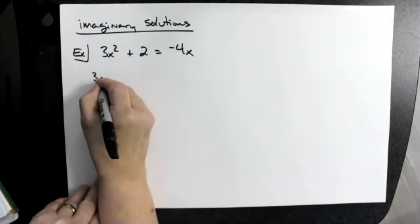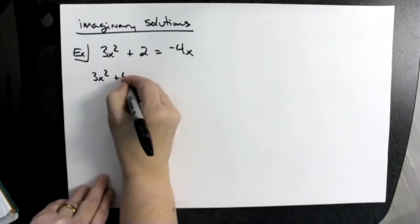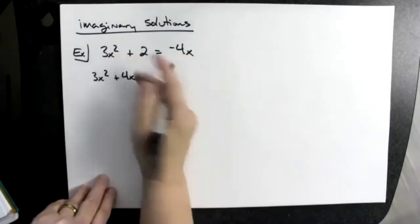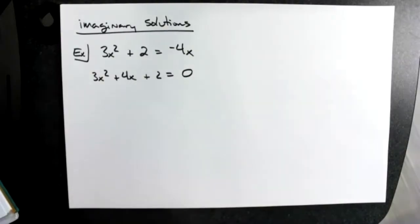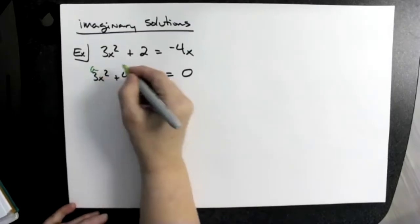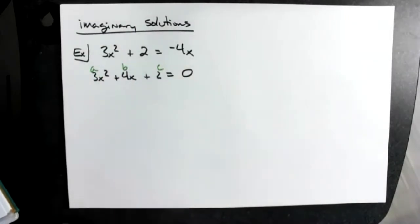I'm going to put it in the middle, so I'm going to go 3x squared, I'm going to add 4x because I had to add 4x to both sides to get it moved, plus 2 equals 0. At that point, now we have our a value, our b value, and our c value.